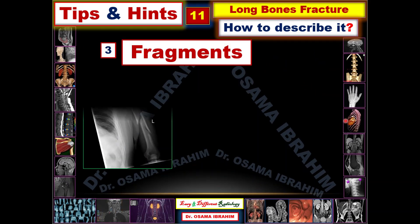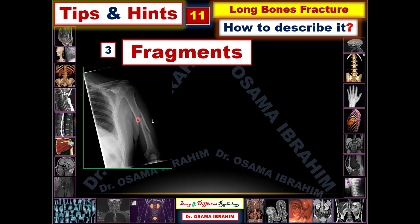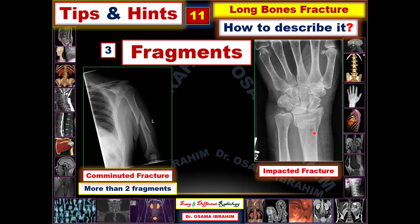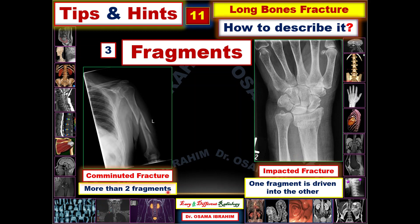The third item is fragments, and this is a very important item. If you look at this humerus — the left humerus — you can discriminate three parts of the bone. If there are more than two bone fragments, it is described as a comminuted fracture. If the bone is impacted into the other bone, like this radius, it is described as an impacted fracture.